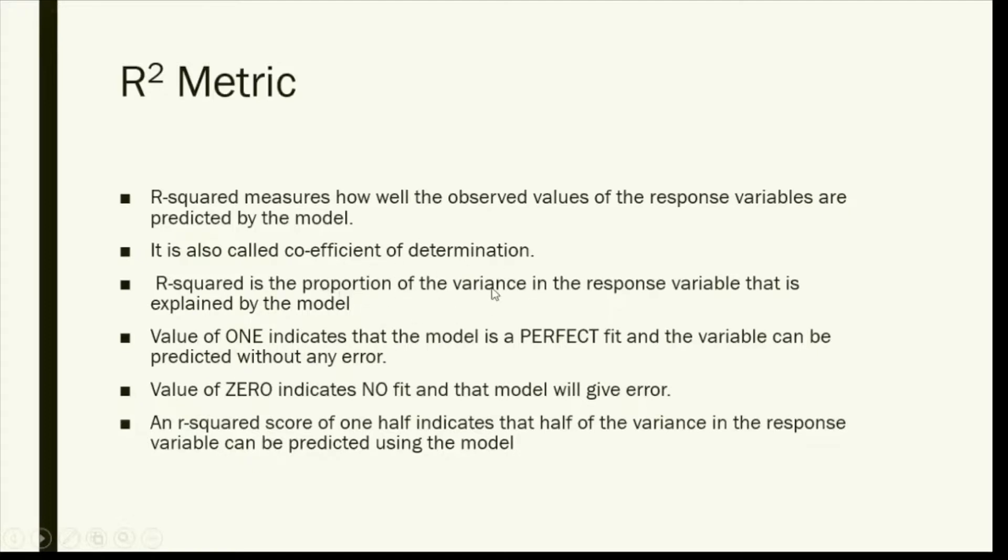It is also called coefficient of determination. This R-squared is the proportion of the variance in response variable that is explained by the model. If R-squared equals one, this means that my model is a perfect fit and the variable or the predicted value can be predicted without any error.